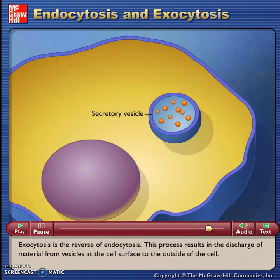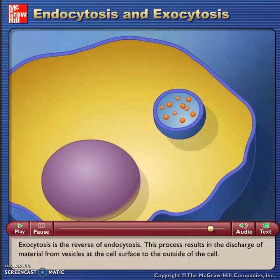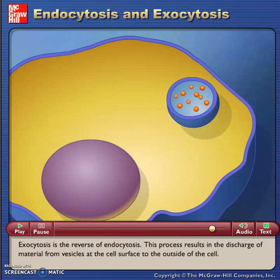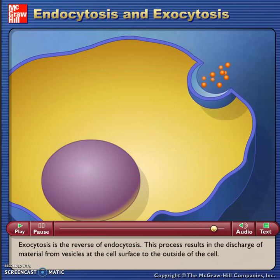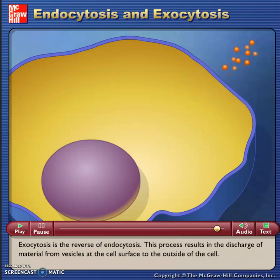Exocytosis is the reverse of endocytosis. This process results in the discharge of material from vesicles at the cell surface to the outside of the cell.